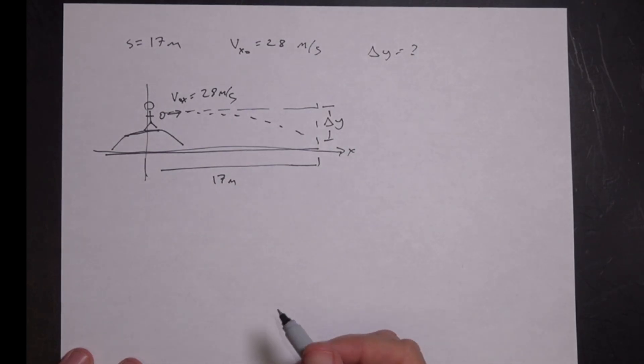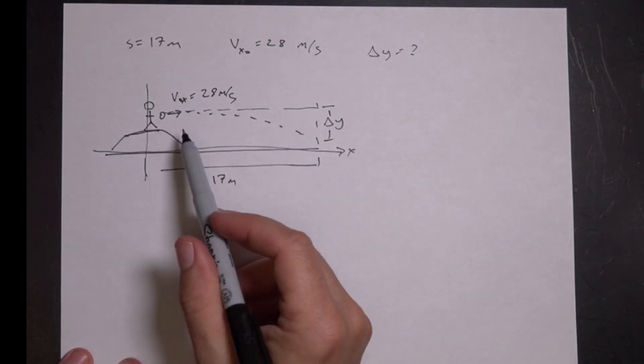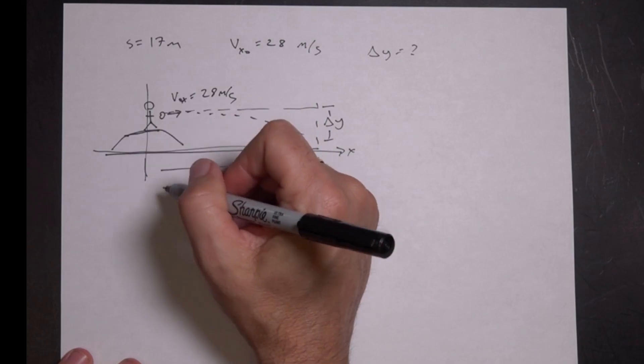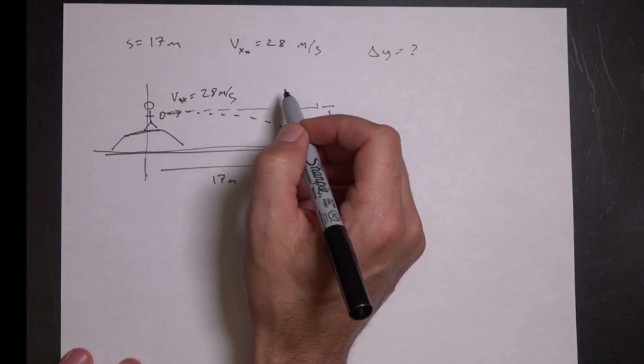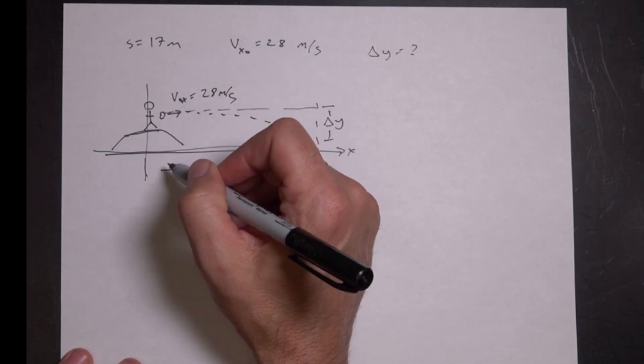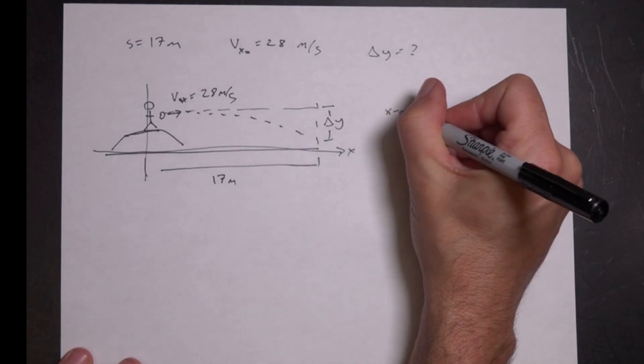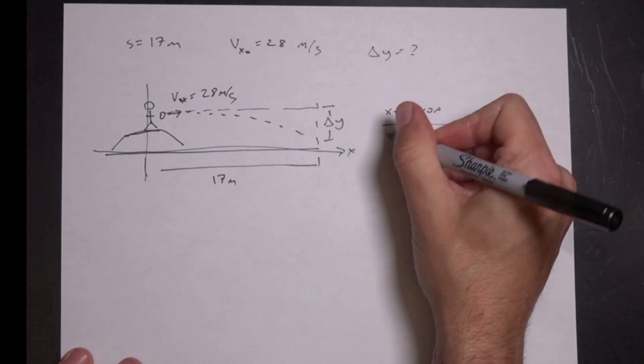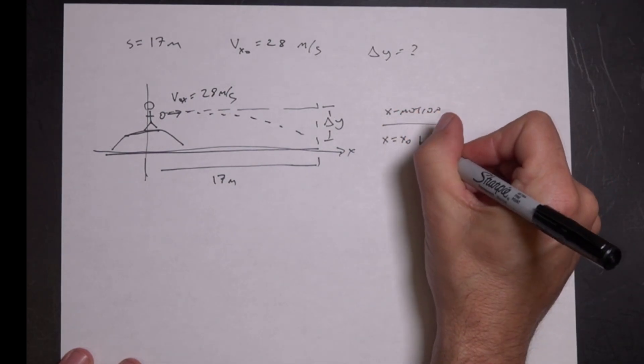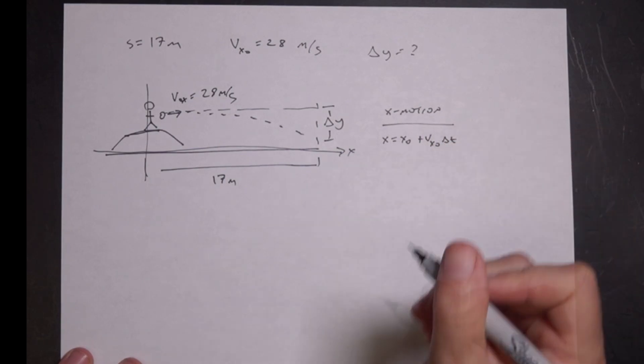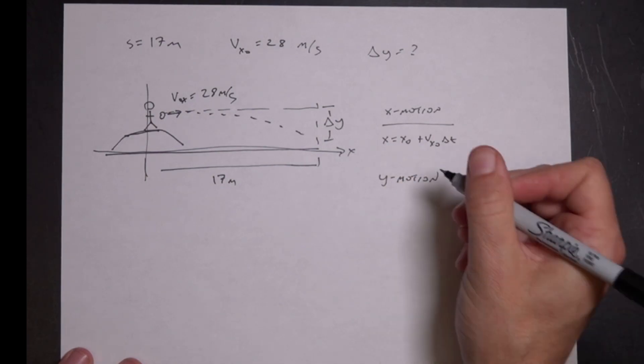So in projectile motion, there's really one big idea. And that's the motion in the horizontal direction. There's only one force acting on the ball. It's the downward gravitational force. So that means that the motion in the x direction is constant velocity. The motion in the vertical direction is constant acceleration. And those two motions are independent except for time. So I can write this x motion. I can say the kinematic equation in the x direction would be x final equals x zero plus v x zero delta t.